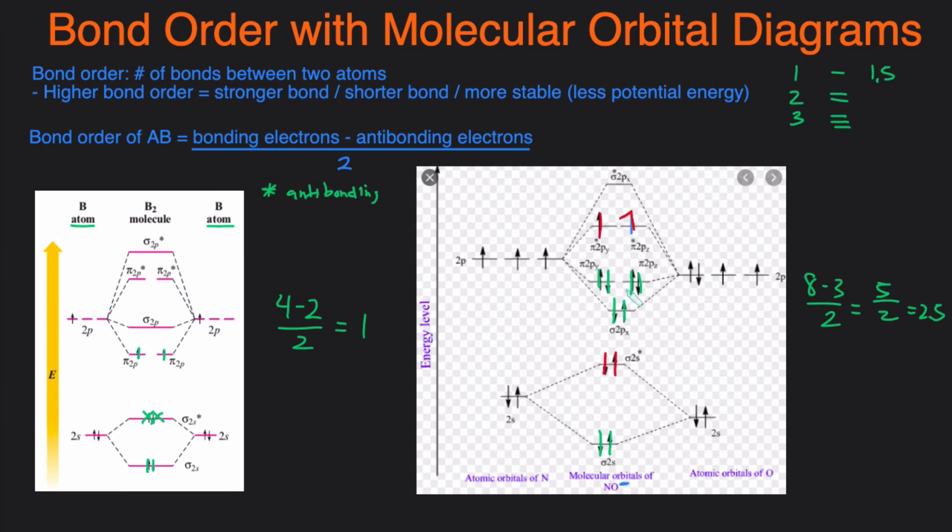And you can see that we added an extra electron in the star orbital. So that's going to be antibonding. So then that means instead of eight minus three it's eight minus four divided by two. So it'll be four over two. So two.